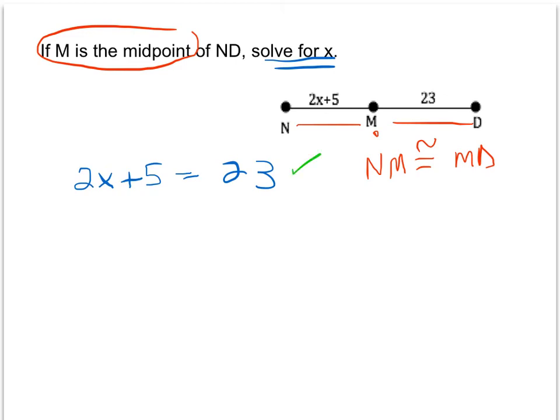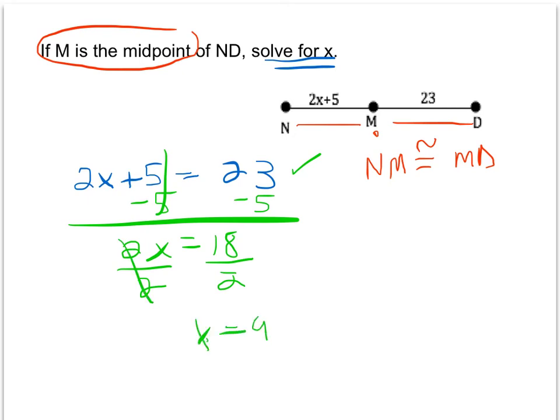So now that we have our equation, this is a simple one-step equation where we want to get x by itself. And we get 2x equals 18 in the last step. Divide both sides by 2, and we get x equals 9.